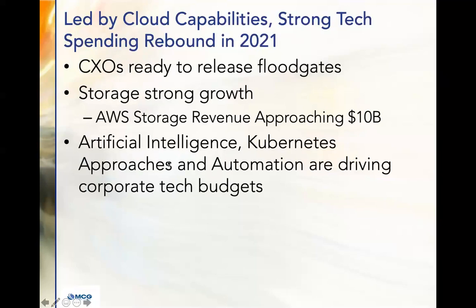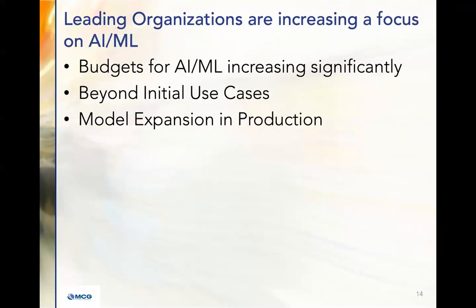There's been a lot of development in terms of storage providers — strong storage growth. AWS storage revenue is approaching $10 billion. They're doing things like providing SANs for the cloud. Pure was actually first with this with their cloud block store in 2019. Also, services that let you programmatically set your service level agreements for IOPs and throughput, automatic tiering and replication, automatically moving data to colder storage tiers. Artificial intelligence, Kubernetes approaches, and automation are driving corporate tech budgets higher. Leading organizations are increasing their focus on AI and ML.